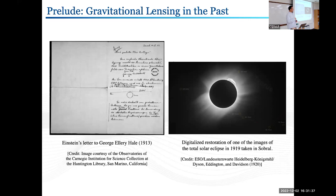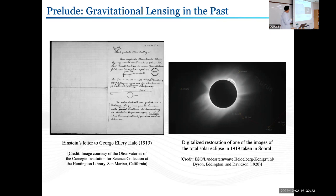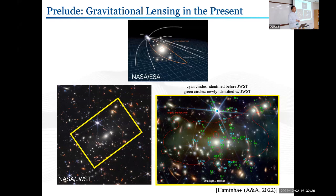Let me start with the history of gravitational lensing. As many of you know, Einstein proposed the observation of bent light around the sun in 1913, more than 100 years ago. Then Eddington and his colleague confirmed and observed light behind the sun around the sun during a total solar eclipse. In the present, gravitational lensing in astronomy is a very common and frequent event.